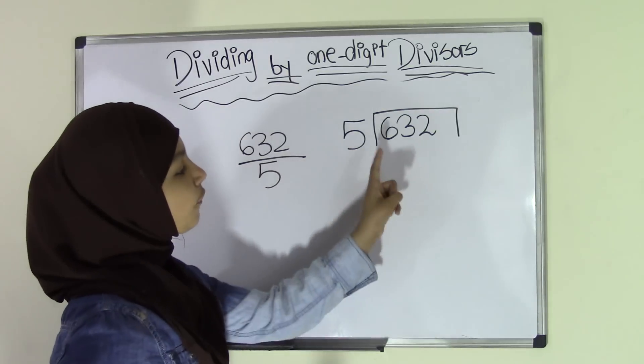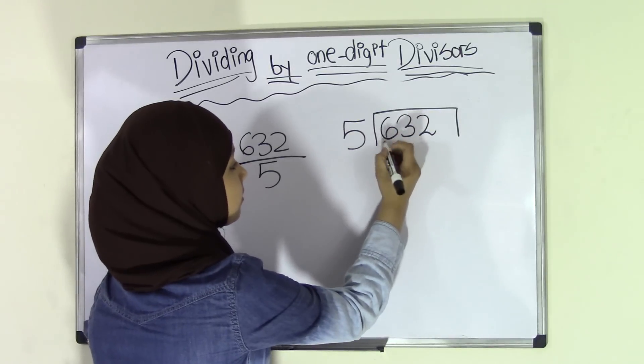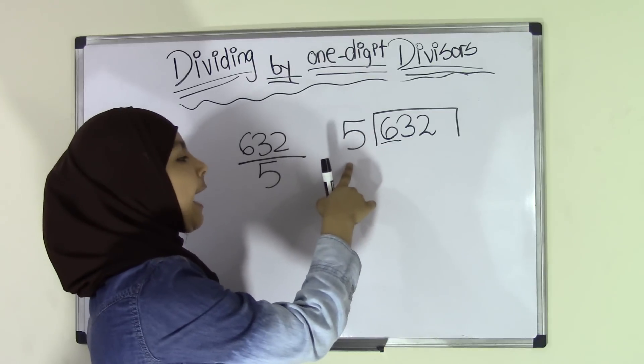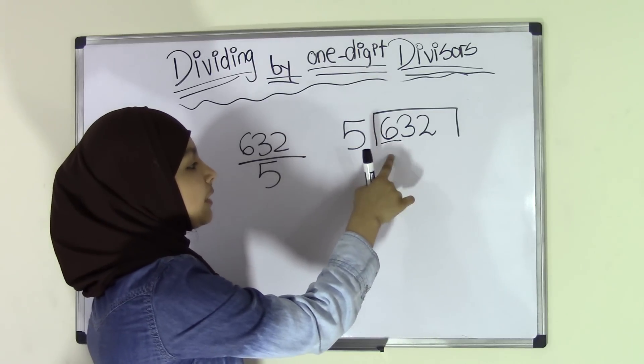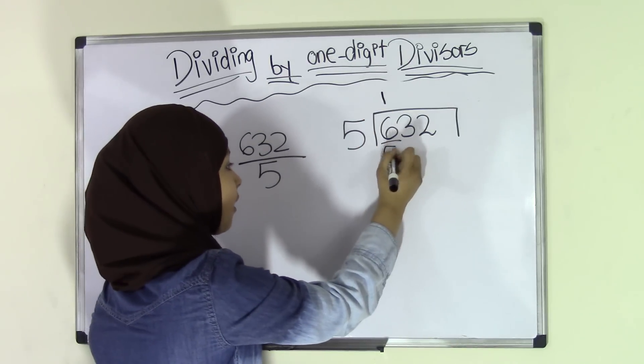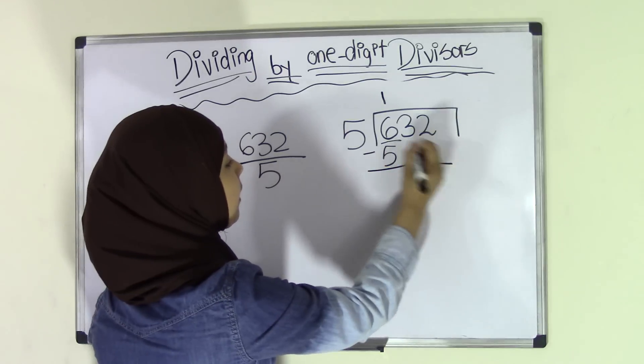First thing you're going to do is you're going to consider the first number in your dividend, which is 6. Now, if you're going to look at our divisor, we're going to see how many times does 5 go into 6. We know that 5 times 1 equals 5. So that means we're going to subtract 6 by 5 and we're going to get 1.